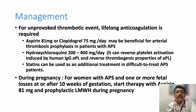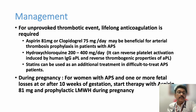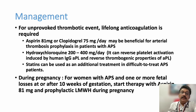Unprovoked thrombotic events in APLA syndrome require lifelong oral anticoagulation. Along with that, aspirin or clopidogrel should be given because arterial thrombosis is a primary concern. Even if the patient presents with venous thrombosis, in APLA syndrome they can later develop arterial thrombosis, so aspirin should be started to prevent it. Hydroxychloroquine can also be started in some patients depending on severity. Statins should be given to all patients with arterial thrombosis, irrespective of the cause.